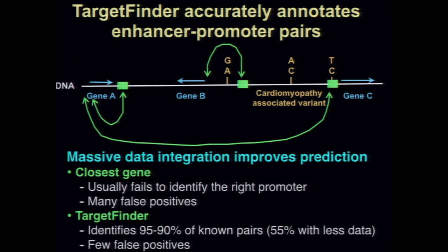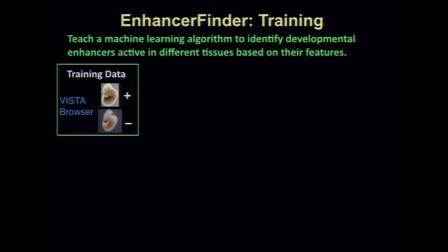In the last couple of minutes, I want to mention how to find the enhancers, because we've also used machine learning to work on this published problem. Which sequences function as these long-range enhancers? We've been particularly interested in development because the bioinformatics tell us that many of the human accelerated regions function in development, and we have collaborations in heart and brain development at the Gladstone Institutes.